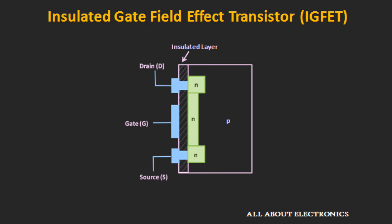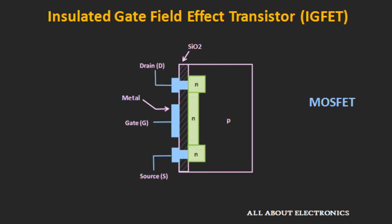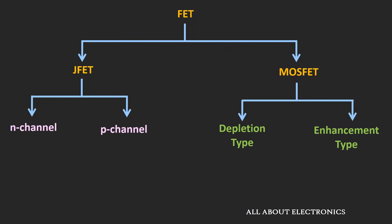The IGFET uses an insulated layer between the gate terminal and the channel. Typically, this insulated layer is formed from the oxide layer of the semiconductor. The name IGFET refers to any type of FET which has an insulated gate, and the most common form of IGFET is the MOSFET. In the MOSFET, the gate is made up of a metal layer and the insulating layer is made up of silicon dioxide.